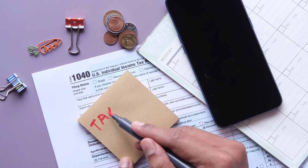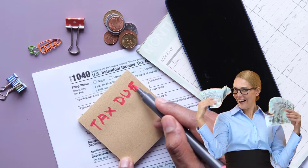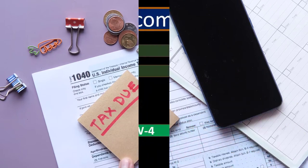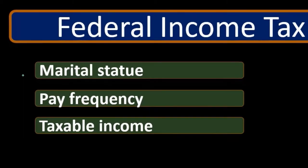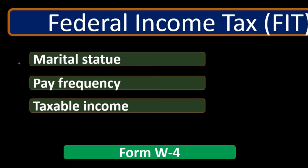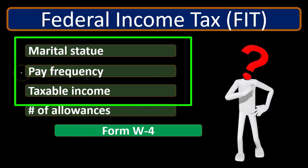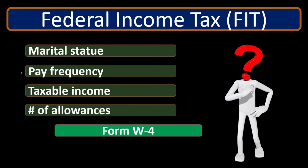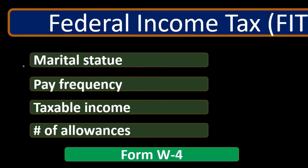We're going to need marital status, we're going to need the pay frequency — meaning when the company pay period is: do they pay weekly, monthly, bi-weekly, or semi-annually — and we need the taxable income for this calculation. We also need the number of allowances. These four things are going to be reflected in our 1040 at the end of the year. The income tax is not a flat tax; it's a complicated tax to calculate.